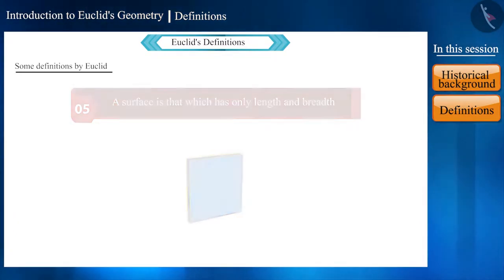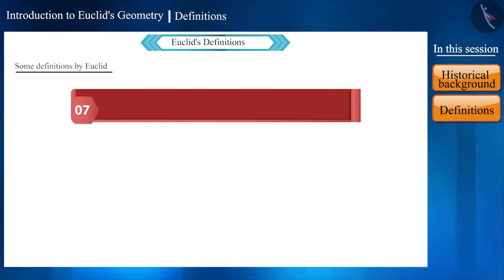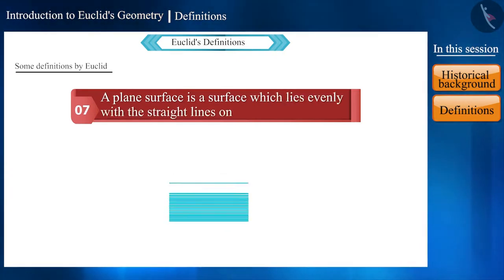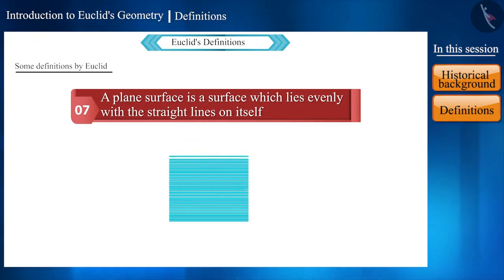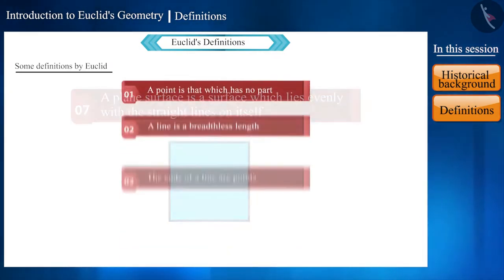The sixth definition says that the edges of a surface are lines, that is, boundaries. And the seventh definition says that a plain surface is a surface which lies evenly with the straight lines on itself. That is, we can say that there are many lines on a surface.